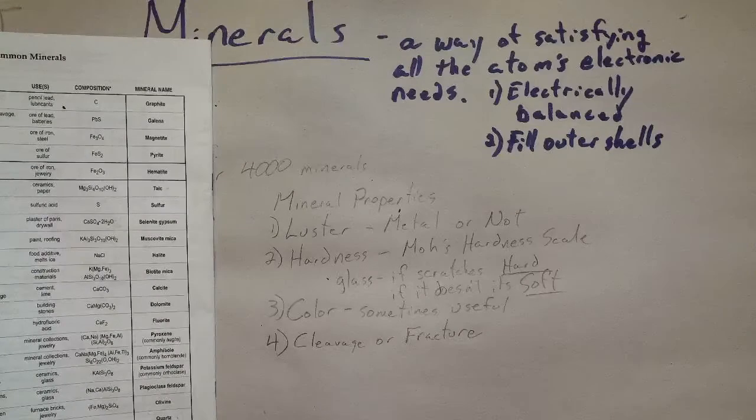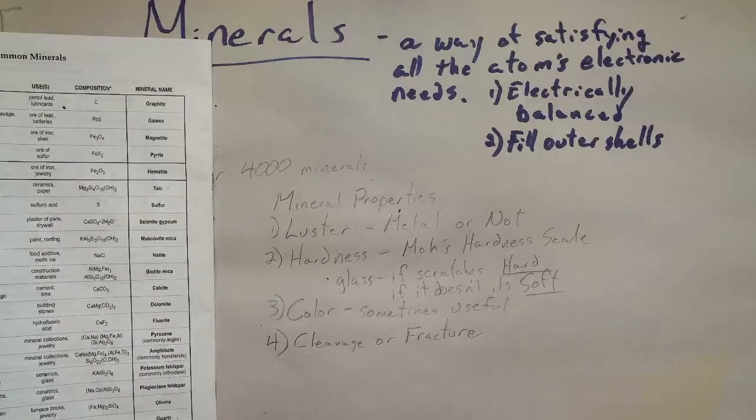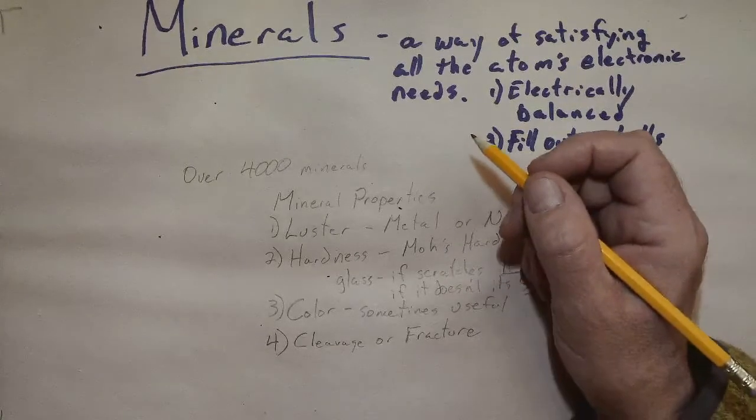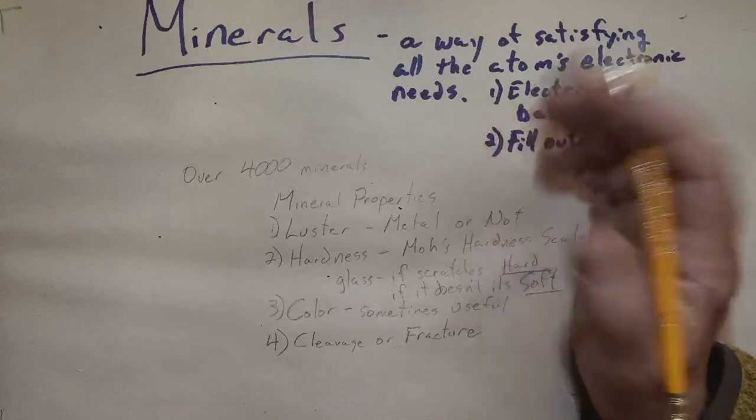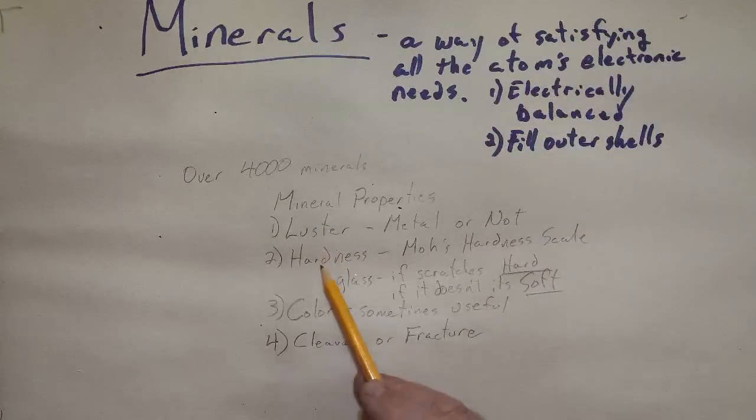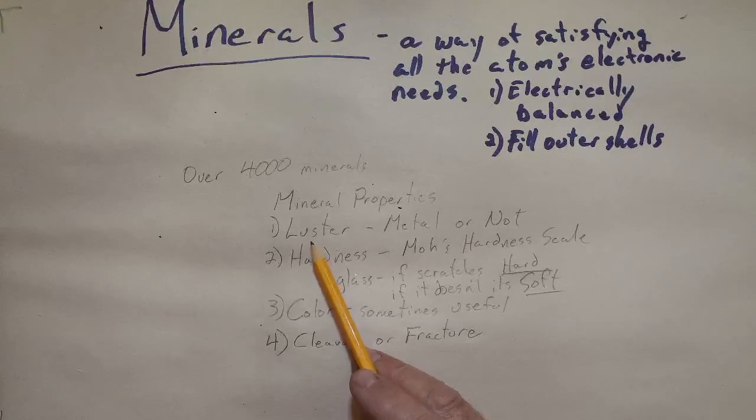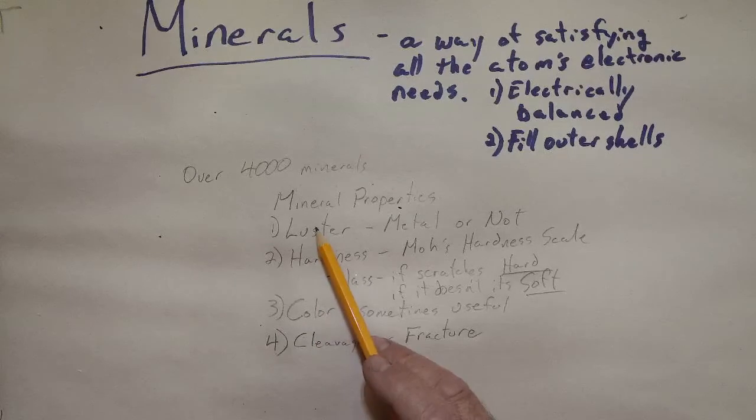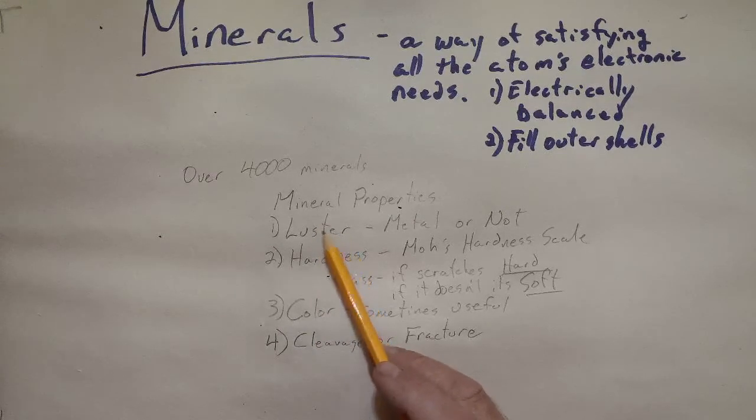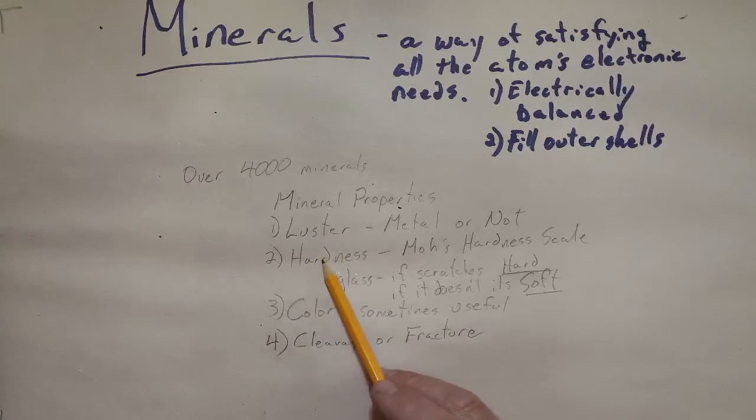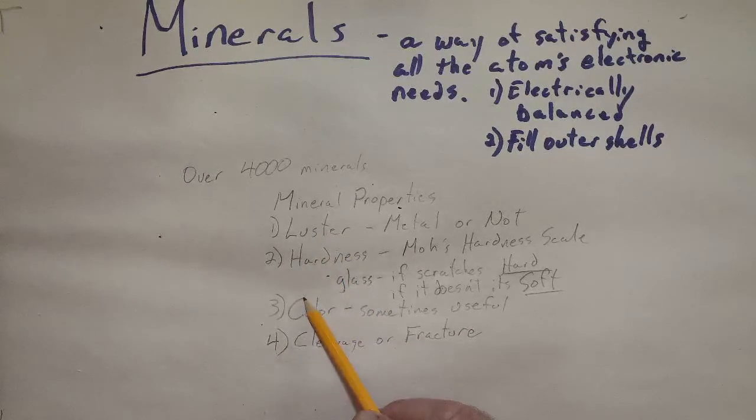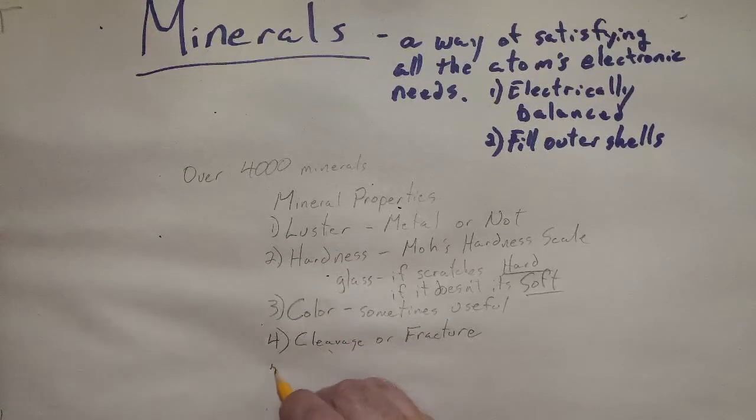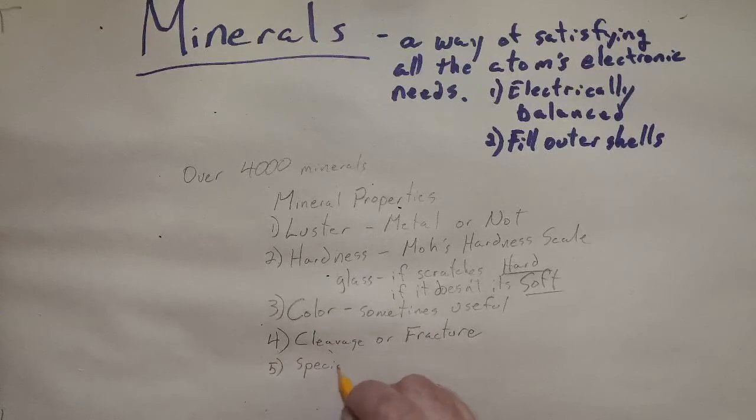Fracture is when it doesn't break like that. It has no happy direction to break and it just kind of looks like a mess. So when we're looking at minerals and you're trying to determine what it is, these are some properties that will help you tremendously in figuring it out. The luster, the hardness, sometimes the color, cleavage or fracture, and then sometimes there are also special properties.